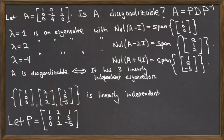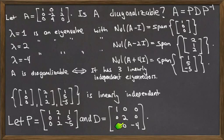So for instance, [1, 0, 0] corresponded to lambda equal to 1. The second vector corresponded to lambda equal to 2. And the third one corresponds to lambda equal to minus 4. So you should take D to be the matrix with 1, 2, and minus 4 along the diagonal in that order, preserving the order that you wrote the eigenvectors in.